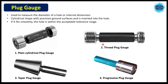Now let's discuss the different types of gauges. The first type is the plug gauge. There are different types of plug gauges: plain cylindrical plug gauge, thread plug gauge, taper plug gauge, and progressive plug gauge. The plug gauge is used to check the diameter of a hole or internal dimensions. It has a cylindrical form, and if it fits perfectly, we accept the part.